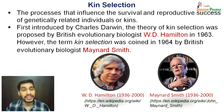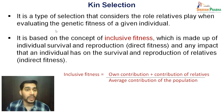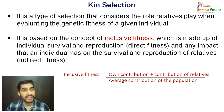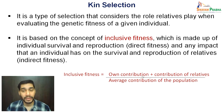However, the term kin selection was coined in 1964 by British evolutionary biologist Maynard Smith. Kin selection is a type of selection that considers the role relatives play when evaluating the genetic fitness of a given individual. It is based on the concept of inclusive fitness, which is made up of individual survival and reproduction — defined as direct fitness — and also comprises any impact that an individual has on the survival and reproduction of relatives, which means indirect fitness. So inclusive fitness is defined as own contribution plus the contribution of relatives, divided by the average contribution of the population.